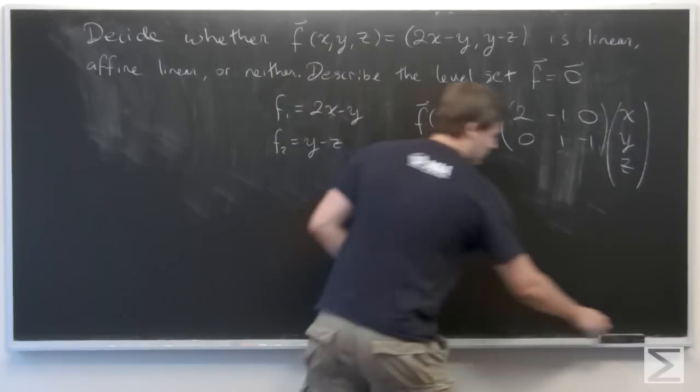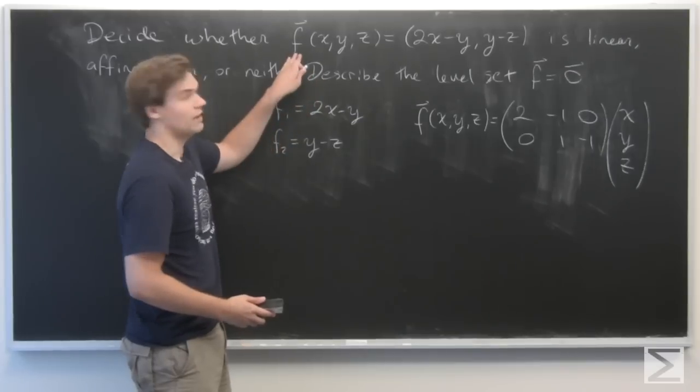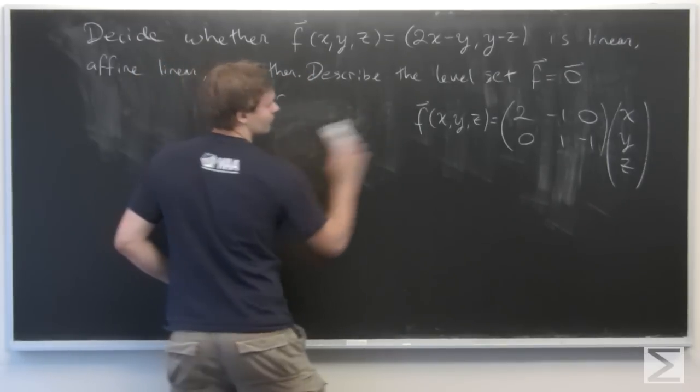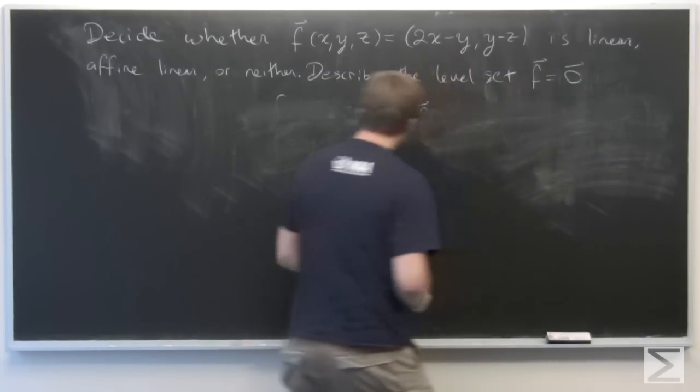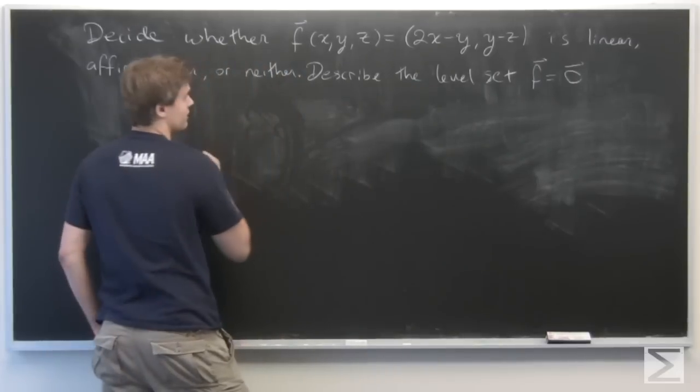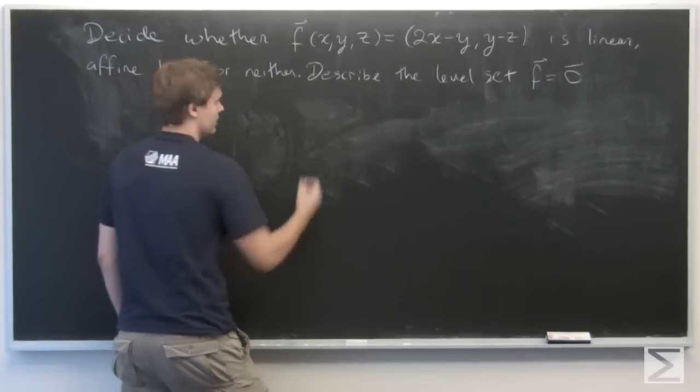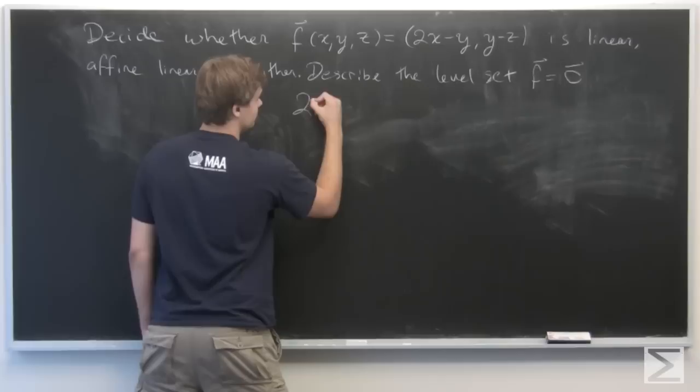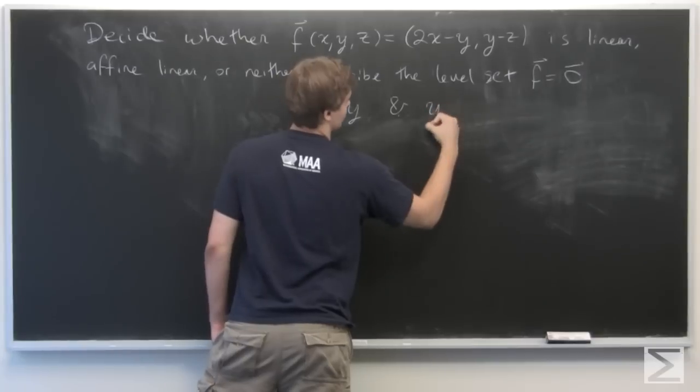Okay, so now that we have that, we want to describe the set of points x, y, z where f equals 0. So, if f equals 0, then each of its component functions has to equal 0 as well. So, that gives us 2x equals y, and y equals z.